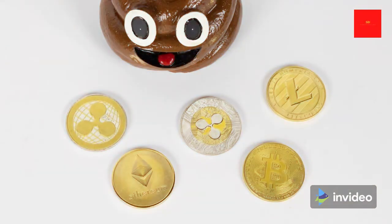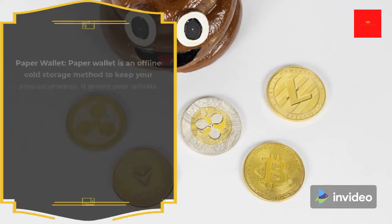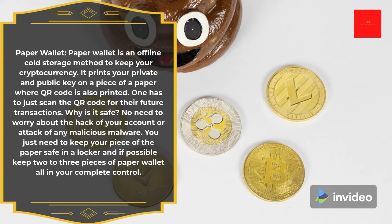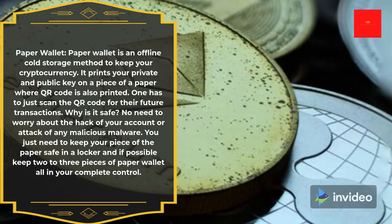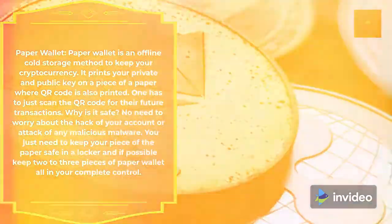A paper wallet is an offline cold storage method to keep your cryptocurrency. It prints your private and public key on a piece of paper where a QR code is also printed, and you just need to scan the QR code for future transactions. It is safe because there is no need to worry about account hacks or malicious malware. You just need to keep the paper safe in a locker, and if possible, keep two to three copies of the paper wallet all in your complete control.